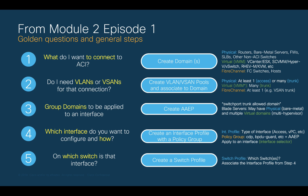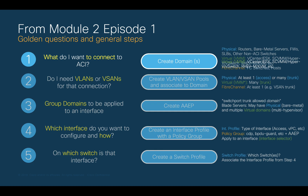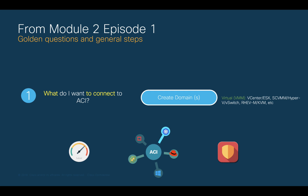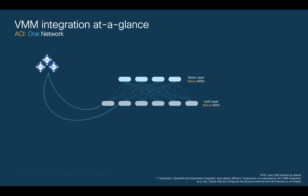In Episode 1, we learned some golden questions that will lead you to connect pretty much anything to ACI. Amongst those things which relate to the first question are virtual domains, which include integrating VMware, Hyper-V, Red Hat, and other hypervisor networking flavors. In this chapter, you will learn how to create a Virtual Machine Manager or VMM domain and integrate virtual networking to ACI in order to configure one network instead of multiple.